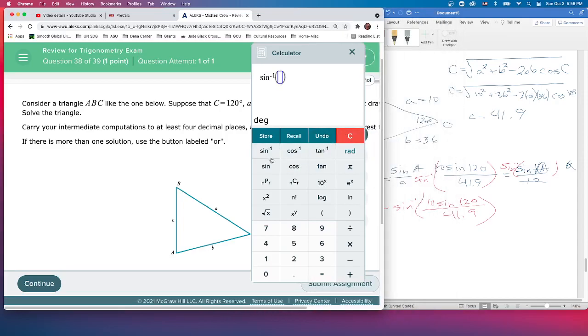Inverse sine... 10 times sine of 120. 10 sine of 120, see how it always puts those parentheses for us, divided by 41.9. Probably be good. So that's an angle of 11.92.